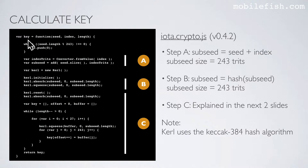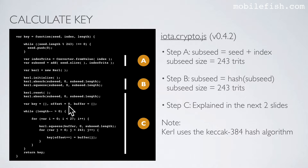This is the code to calculate the key, found in the iota.crypto.js library version 0.4.2. This is step A, where you calculate the sub-seed. The sub-seed is calculated by adding the seed and the index number together. The sub-seed size is 243 trits. This is step B, where the sub-seed is hashed. This is step C, which will be explained in the next two slides. Please note the curl function uses the Keccak384 hash algorithm; in the future this might change.